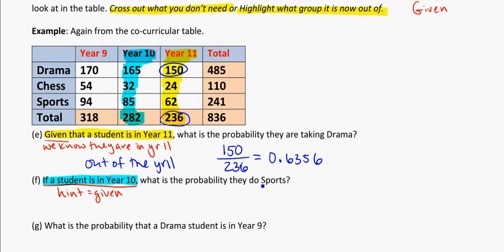What is the probability that they do sports? So that's going to be 85 out of the 282 year 10 students. So 85 divided by 282. And I get 0.3014. So the language there is a little bit more hidden. But here I'm saying if a student is in year 10. So that's the hint right there. Well, I know that the student's in year 10.